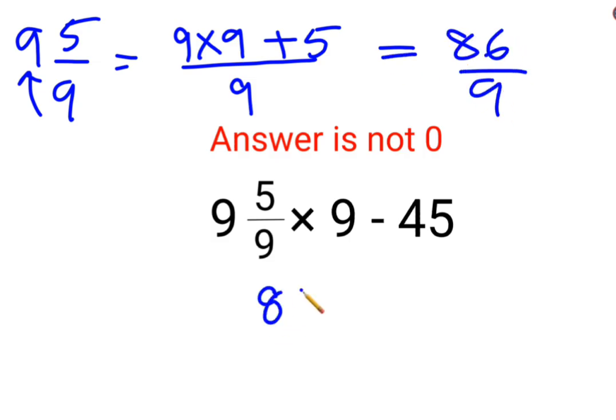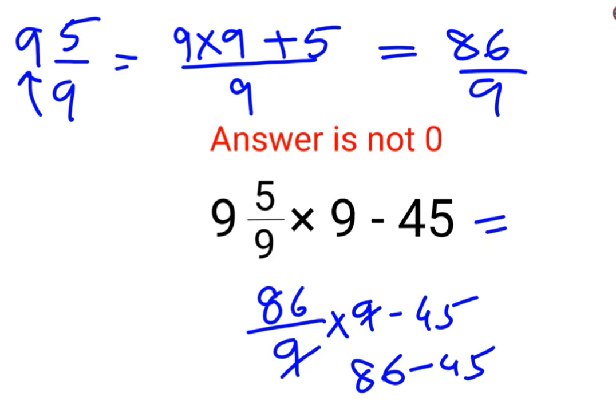Okay, so we have 86 upon 9 multiplied by 9 minus 45. So this gets cancelled. So we are left with 86 minus 45. So the answer for this question is supposed to be just 41.